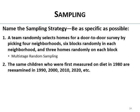The same children who were first measured on diet in 1980 are reexamined in 1990, 2000, 2010, 2020, and so on — following those same children over time. When you repeatedly measure the same sample, that is longitudinal sampling.